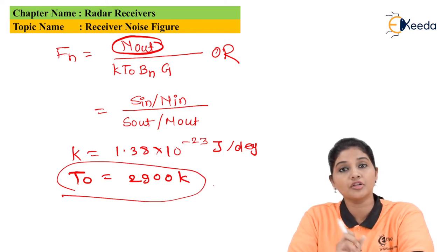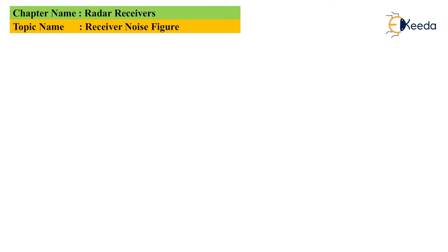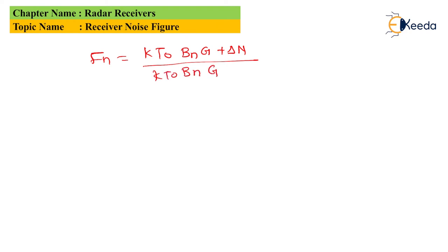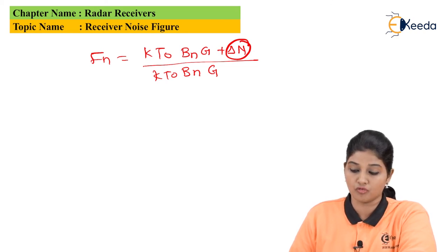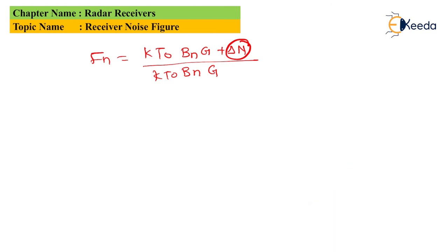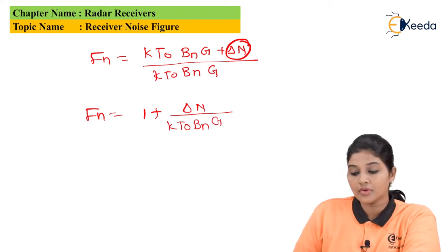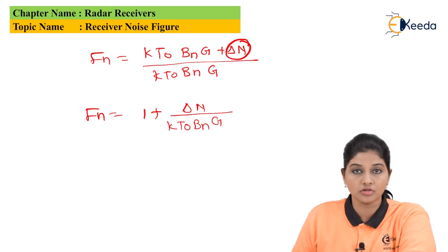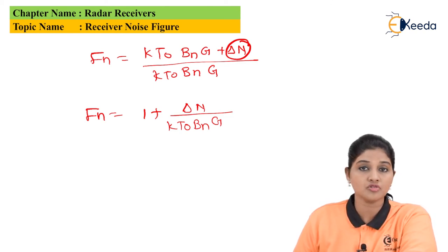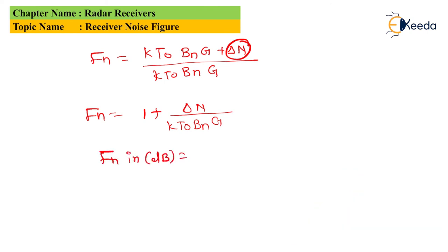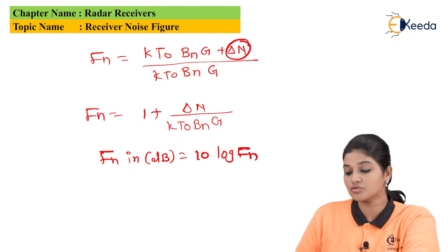The noise figure can also be defined in terms of external noise, where delta N is the additional noise added by external networks. Simplifying this equation gives: FN = 1 + (delta N / KT₀BNG), where K is Boltzmann's constant, T is the standard temperature, BN is the bandwidth, and G is the gain. The noise figure FN is also expressed in dB as: FN(dB) = 10 log(FN).